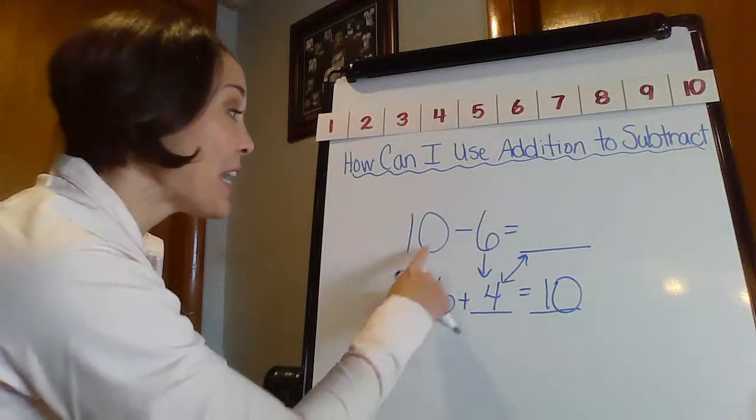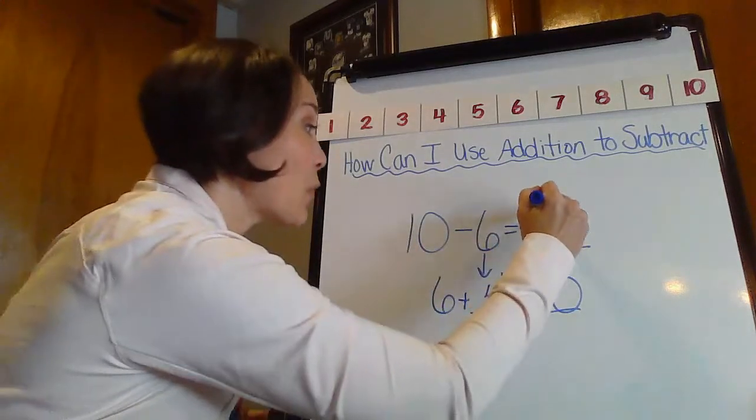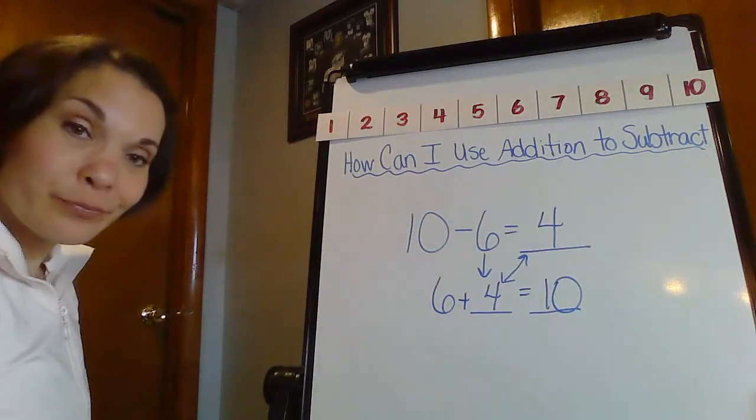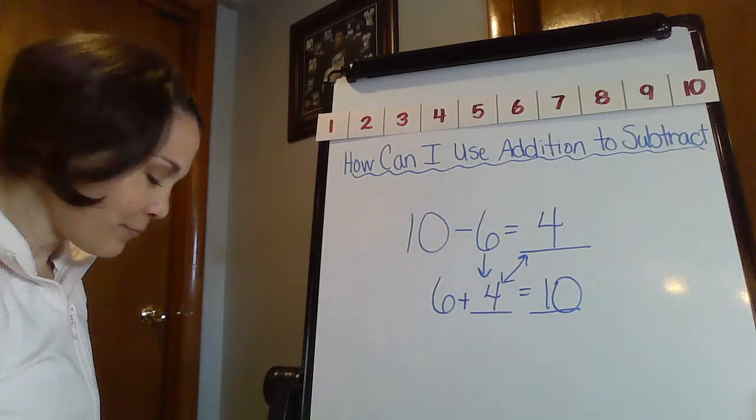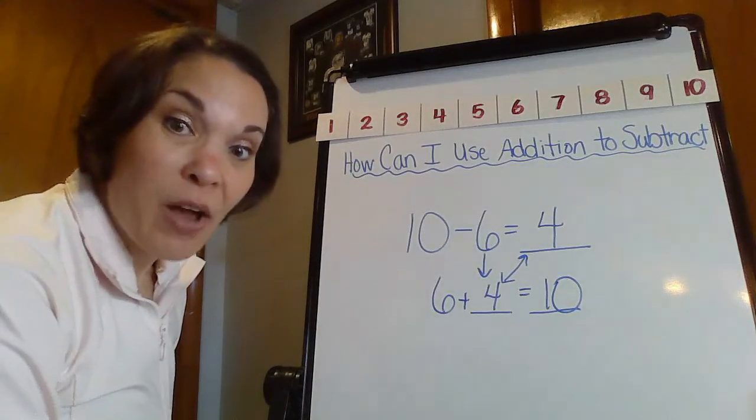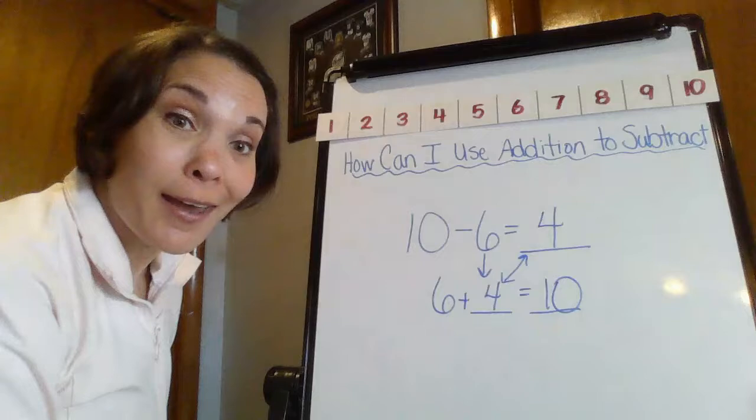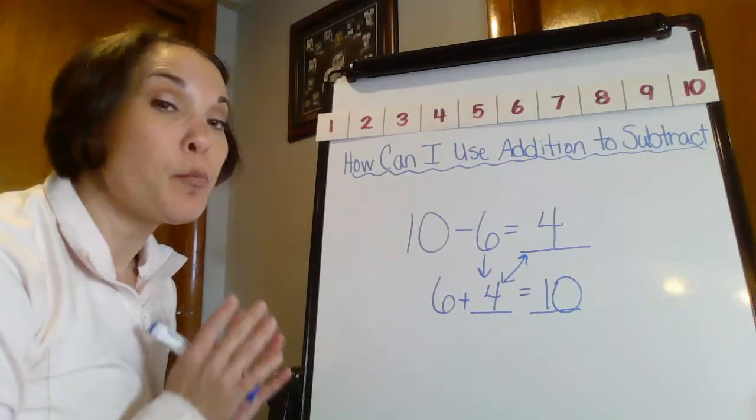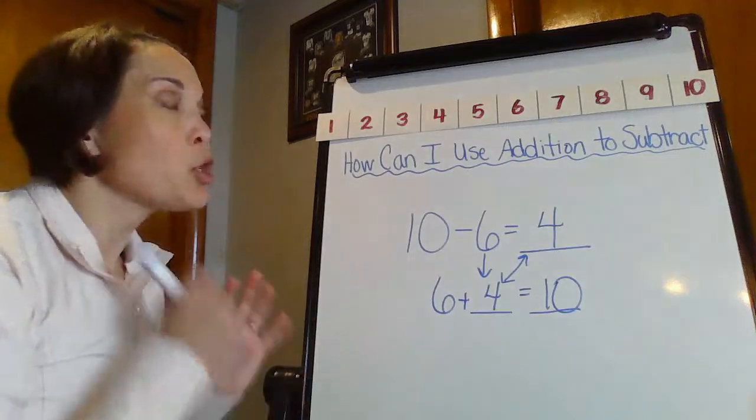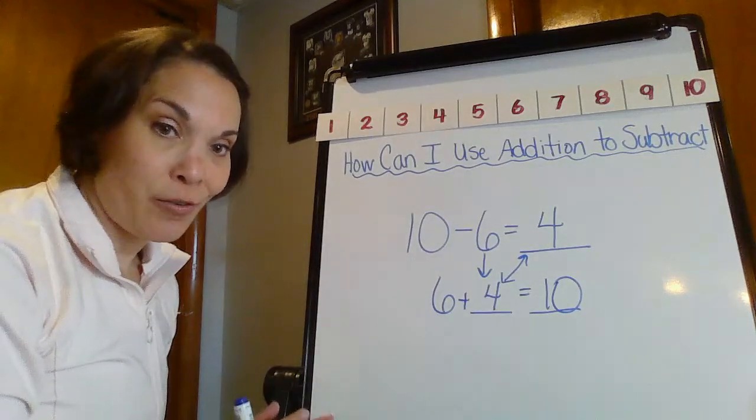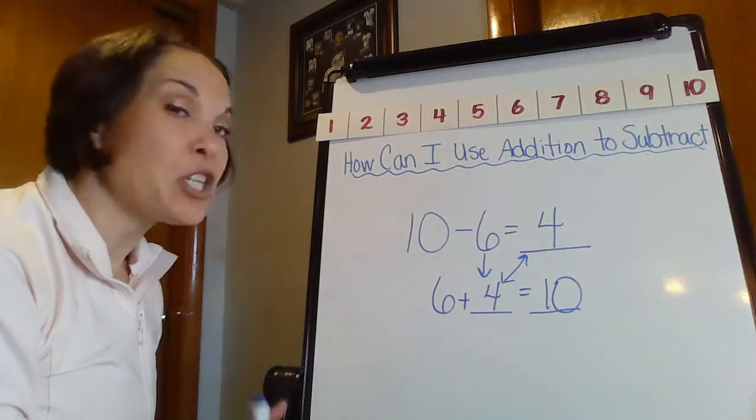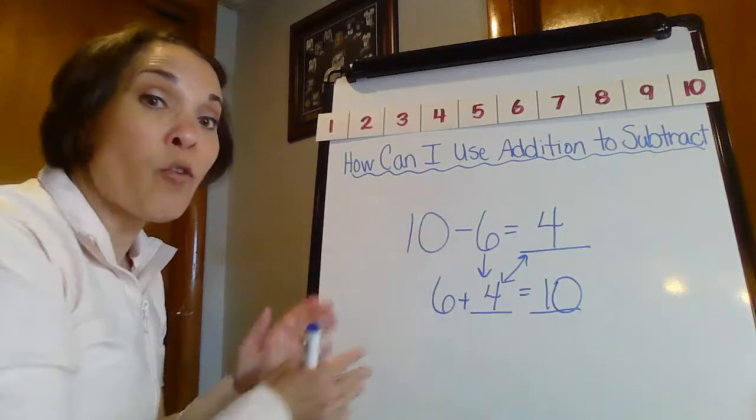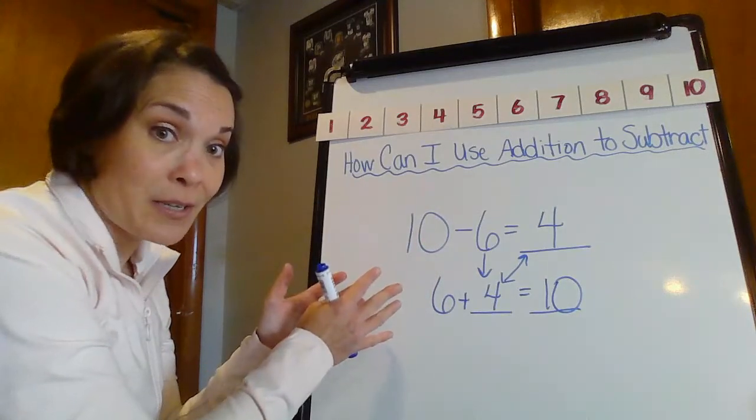So therefore, 10 take away 6 equals 4. How about that? What a neat trick. So that's where we're talking about how it's really important to know your addition facts, because knowing addition facts is going to help you solve for subtraction facts.